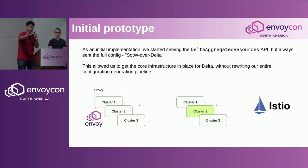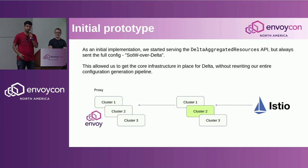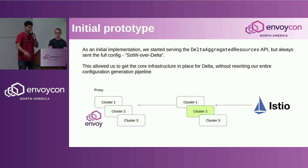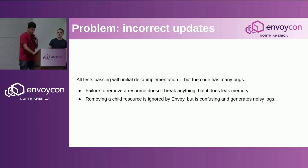Our initial Delta XDS implementation was literally taking state-of-the-world generation and putting it onto the Delta API. So if you used Istio 1.10 and enabled Delta XDS, there were no performance improvements — it was still state-of-the-world generation over the Delta API. This was to get the core infrastructure in place without rewriting the entire configuration generation pipeline.